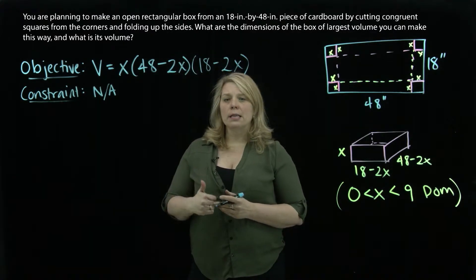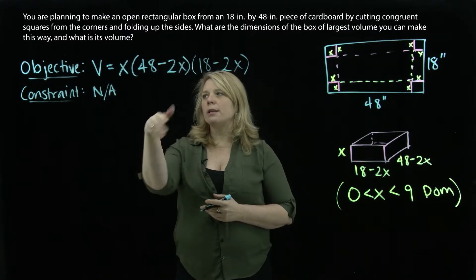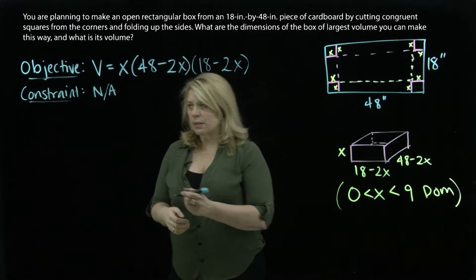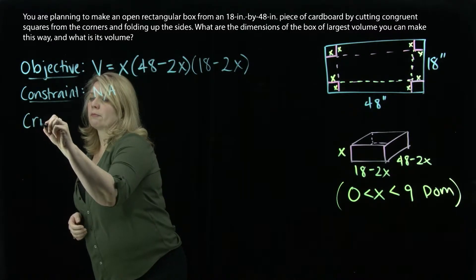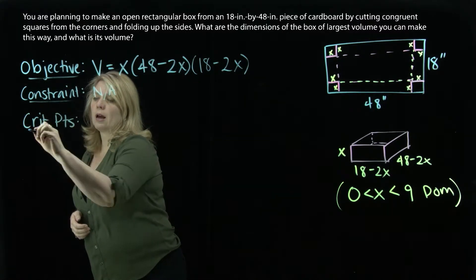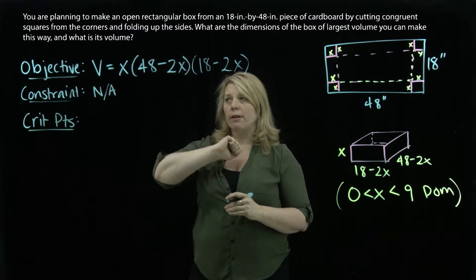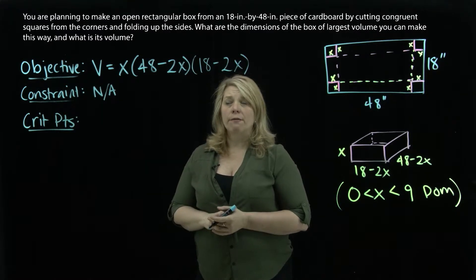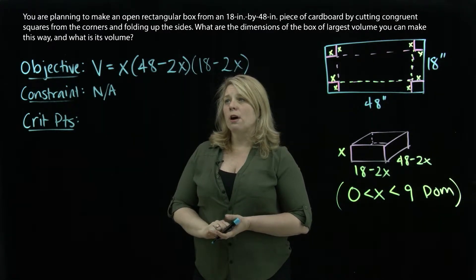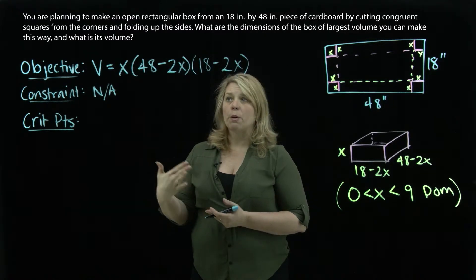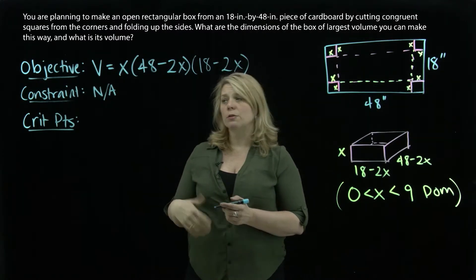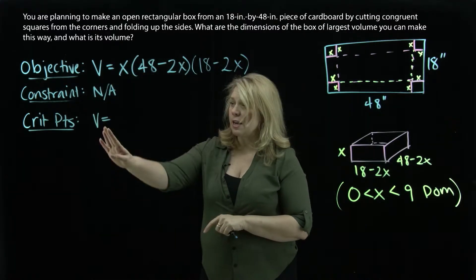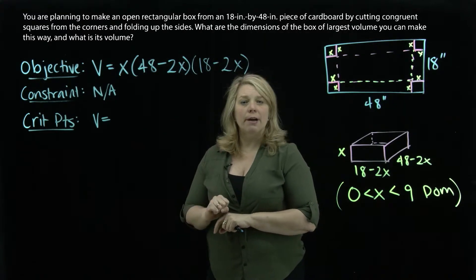So the next thing that we usually do after we've written our constraint is substitute into the objective function. But I don't need to do that here since I have only one variable. So we're going to find critical points. I'll need a derivative. I could take the derivative of this function as it's written, but probably it's easier if I just do a little bit of algebra first and multiply this all out so that I can then just take the derivative of a polynomial instead of having to use a couple of different product rules. So first I'm going to simplify that objective function. This is v, not v prime yet. I'm going to skip a little bit of algebra here.